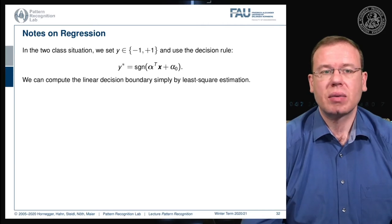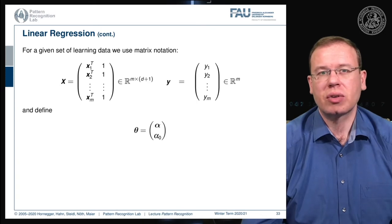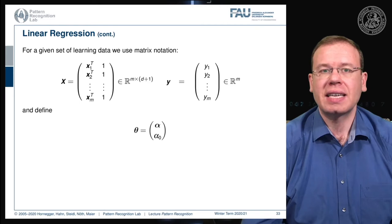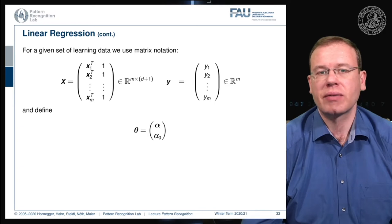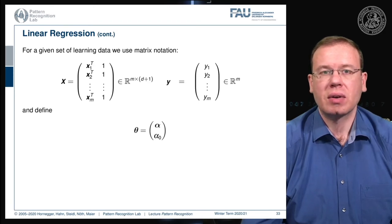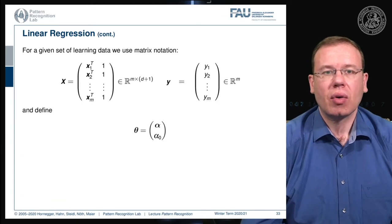The idea is we can compute this decision boundary simply by least square estimation. We convert our entire training set into a matrix and a vector. The matrix is given by the individual feature vectors transposed, and we add a column of ones in the very end. This gives us the matrix X in an m times d plus one dimensional space. This is then related to some vector y with the class memberships of the respective feature vector. We want to relate those two with a parameter vector theta composed of the normal vector alpha and our bias alpha zero.